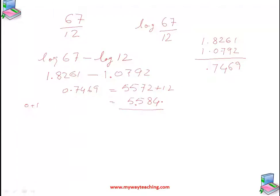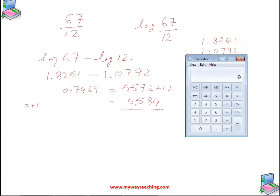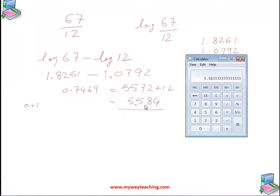We can verify this from a calculator or by normal calculation. The result of 67 divided by 12 is 5.5833. Our log table answer is 5.584, which is correct. This is how we use the log table.